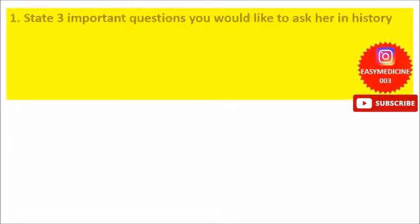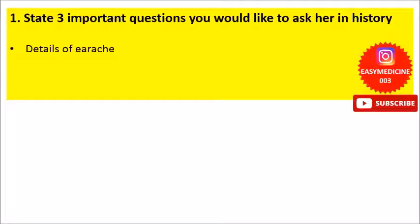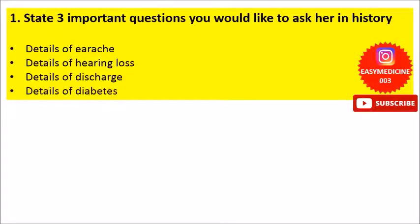The first question was to state three important questions you would like to ask in history. When it comes to history taking it should be in detail, but to make it short, we can ask about the details of the earache as that is the main complaint, followed by the details of any hearing loss and ear discharge. As she is a diabetic patient, we can ask about her diabetic history as well.